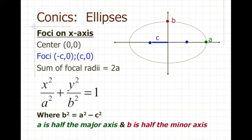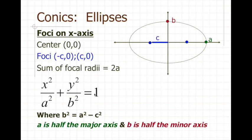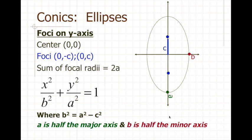Summing up: for an ellipse centered at (0,0) with foci at (±c, 0), the distance from center to focus is c, the sum of the focal radii is 2a, and the minor axis has length 2b. The equation is x²/a² + y²/b² = 1, and the key relationship is b² = a² − c². If the foci are vertically arranged along the y-axis, every relationship stays the same — only the positions of a and b in the equation are swapped.